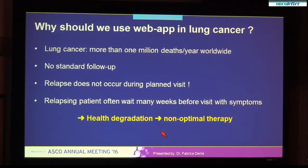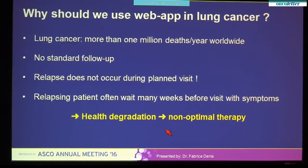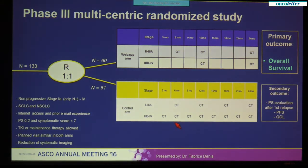Why should we use web applications in lung cancer? Lung cancer is responsible for more than one million deaths every year. There are no standard follow-up protocols to detect relapse, and patients usually visit their oncologist every three to six months with repeated CT scans. However, relapses are frequent and often symptomatic, and they do not occur during planned visits. Symptomatic relapsing patients often wait for their planned visit for many weeks, leading to health degradation and non-optimal therapy, which is reserved for patients having good health conditions because of potential high toxicity. So we developed a web-mediated follow-up to allow early detection of relapse or dangerous medical conditions, as well as early supportive care triggering by analyzing symptoms reported by patients.